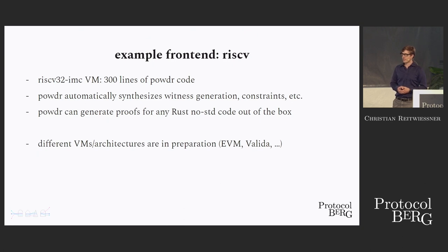We also have different virtual machines and architectures in preparation. EVM and Valida, and this is nice because it allows us to compare how different architectures work. You can take an EVM interpreter written in Rust and compile that through the RISC-V toolchain. But you can also see how this compares to an EVM interpreter or EVM virtual machine written directly in Powder assembly. Or you can compare how compiling Rust through the Valida virtual machine works as opposed to our RISC-V virtual machine.